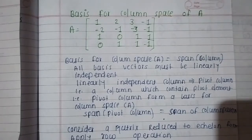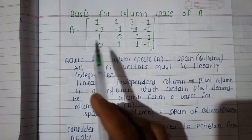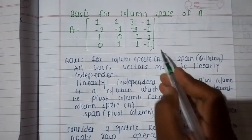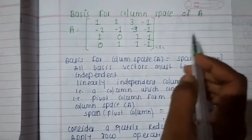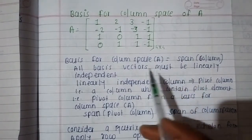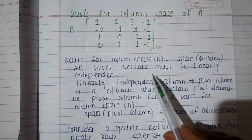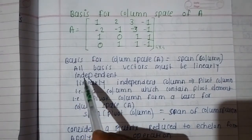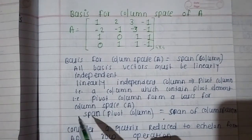Hello everyone, welcome back. Today we start how to find the basis for the column space of a matrix. Consider a matrix of order 4 by 4, that is number of rows are 4 and number of columns are also 4. To find the basis for column space of A, we reduce it to row echelon form. The columns that contain pivot elements form a basis for the column space. All basis vectors must be linearly independent.